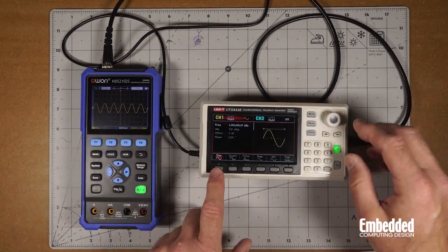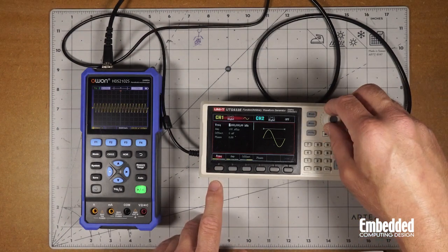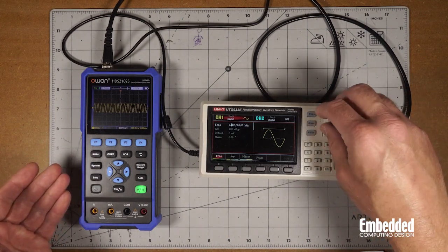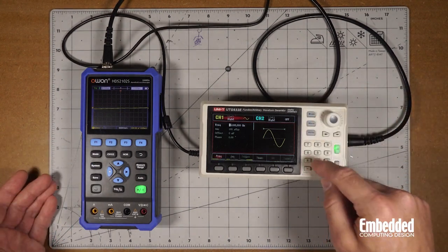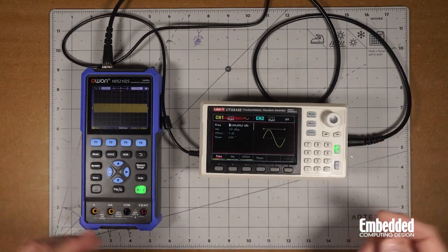If we modify the frequency, we can do that by pressing this in and changing it around. You can see it modifying there, and you can change the digit. You can also type in values, like 10 kilohertz.